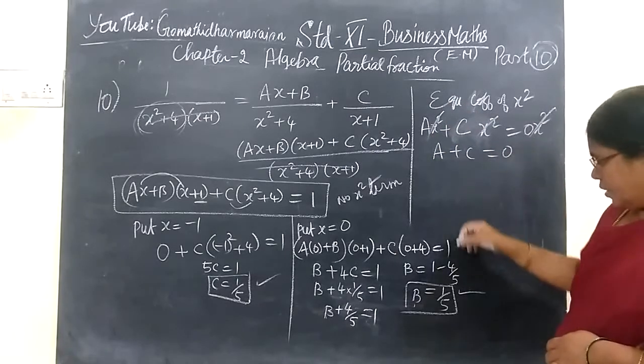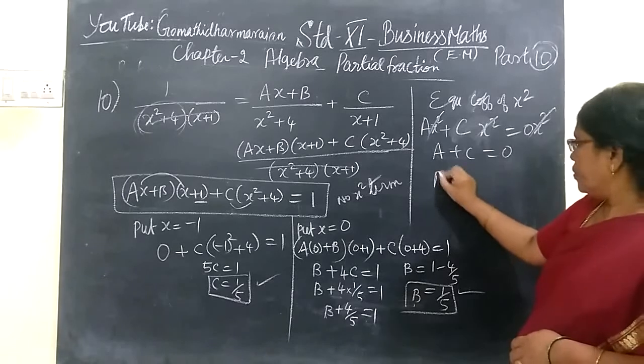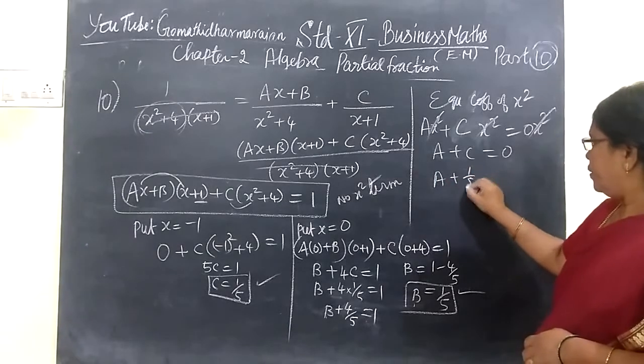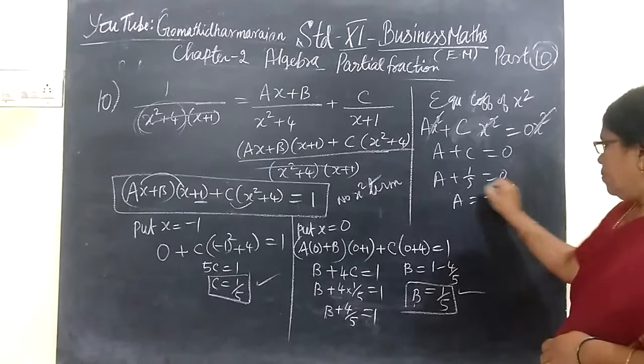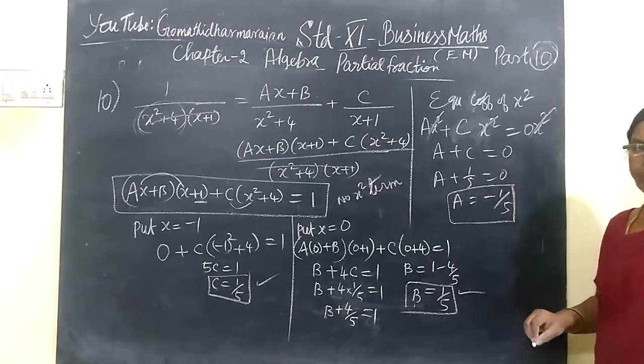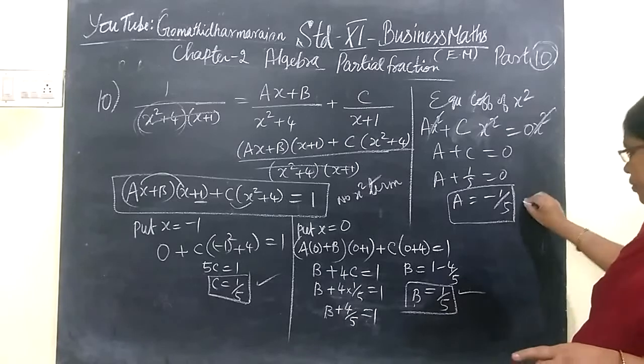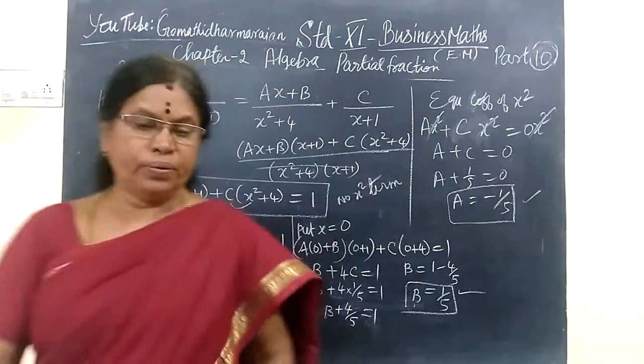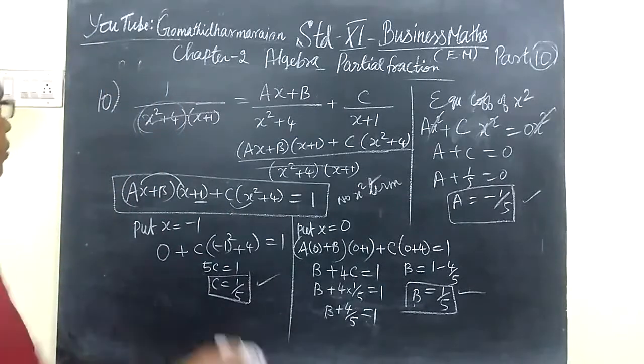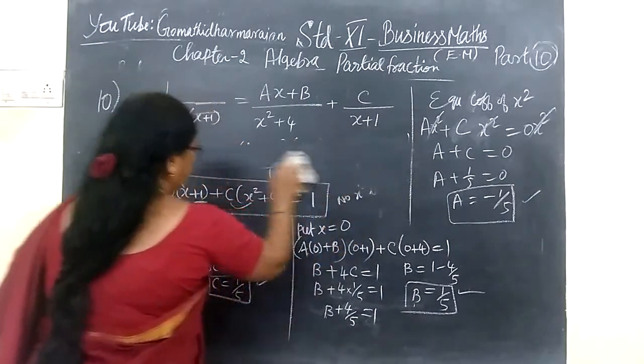A plus C equal to 0. C value 1 by 5 equal to 0, which implies A equal to minus 1 by 5. If you have A value, then B value, then C value, 3 may be understood. So we obtain and substitute this problem.